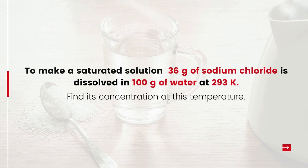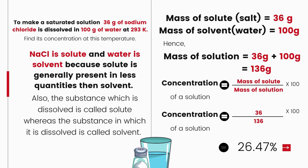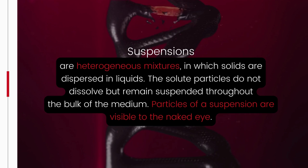To make a saturated solution, 36 g of salt is dissolved in 100 g of water at 293 K. NaCl is the solute and water is the solvent. Mass of solute = 36 g, mass of solvent = 100 g, so mass of solution = 136 g. The concentration = 36 ÷ 136 × 100. Moving on to suspensions: non-homogeneous systems in which solids are dispersed in liquids are called suspensions — a heterogeneous mixture in which solute particles do not dissolve but remain suspended throughout the medium.